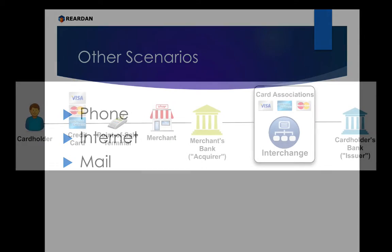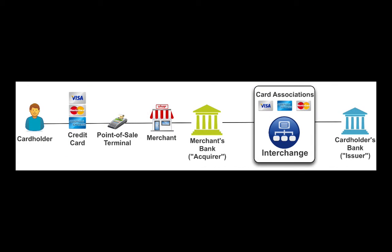In general, the goal and objectives of the Authorization process doesn't differ much from scenario to scenario. The big difference is in how the card member data and purchase data is initially communicated from the customer to the merchant, and secondly, where and how that data flows from the merchant to the merchant's financial institution.